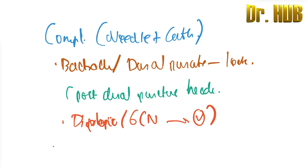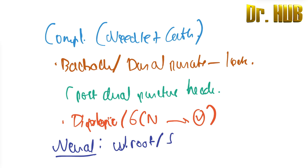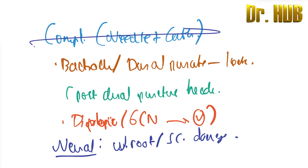Next we look at neural injury. In terms of neural injury, nerve root as well as spinal cord damage is seen. So, to recap: needle and catheter complications include backache, dural puncture leak, post-dural puncture headache, diplopia involving the 6th nerve, and nerve root plus spinal cord damage.